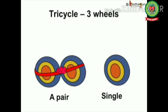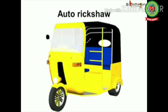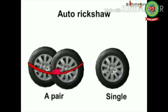Have you seen an auto rickshaw? It also has three wheels — one at the front and two at the back. Similarly, like the tricycle, the wheels at the back make the pair and the front one is left alone, so it will also make only one pair.